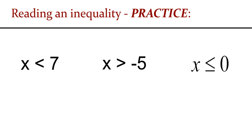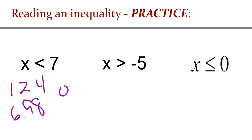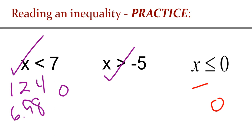Reading left to right: x is less than 7, x is greater than negative 5, and x is less than or equal to 0. For x less than 7, values like 1, 2, 4, 6.98, 0, or any negative number work. For x greater than negative 5, small negatives like negative 4 or negative 2.1 work, but negative 6 does not — be careful with negative numbers. Zero and all positive numbers also satisfy x greater than negative 5. For x less than or equal to 0, any negative number works, and so does zero, but no positive number qualifies.